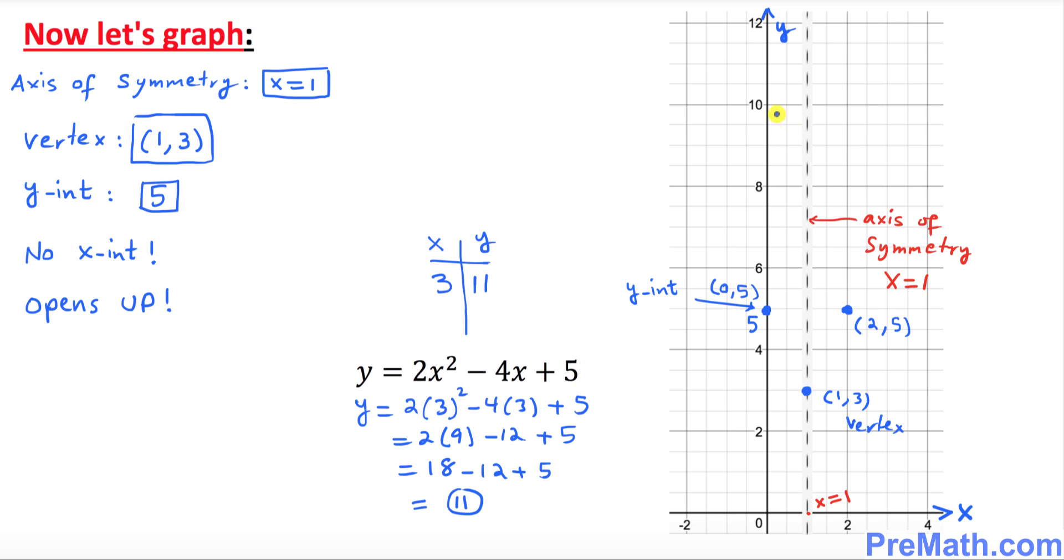The y value turns out to be 11. That means 11 is somewhere here. What we are looking for is (3, 11). So 3 is right here.